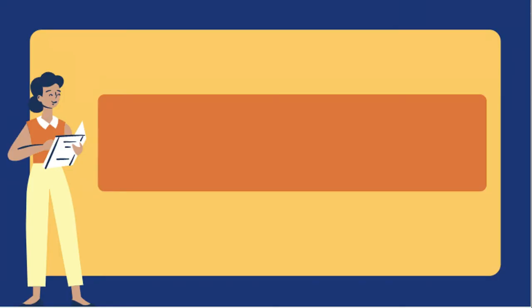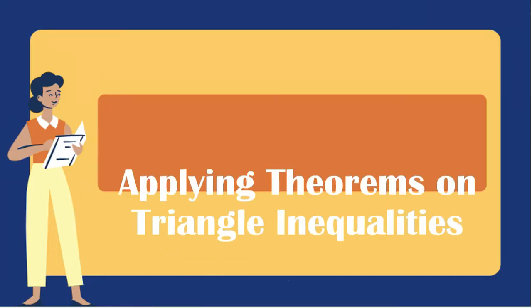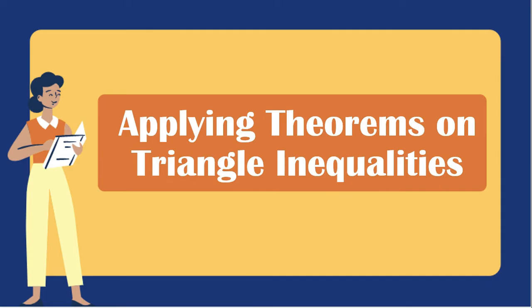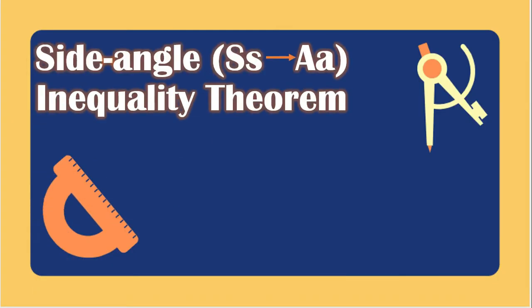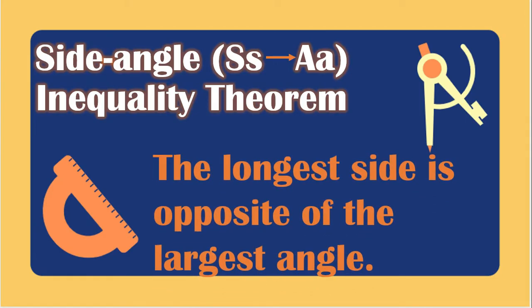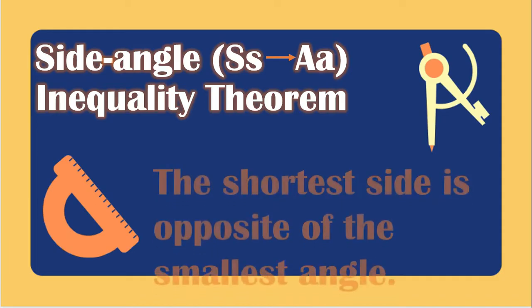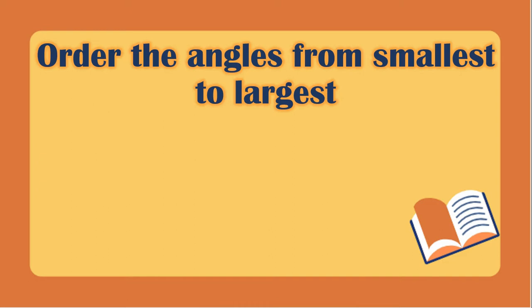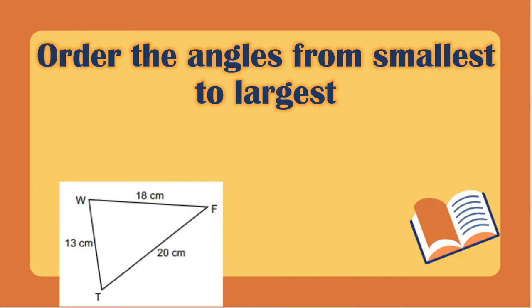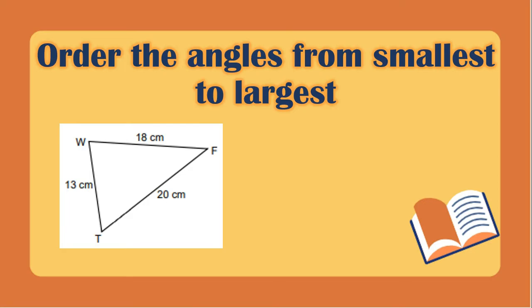In this video lesson we will be applying the theorems on triangle inequalities. Let's start with the side angle inequality theorem. You already know that the longest side is opposite the largest angle and the shortest side is opposite the smallest angle. We will order the angles from smallest to largest using this figure.